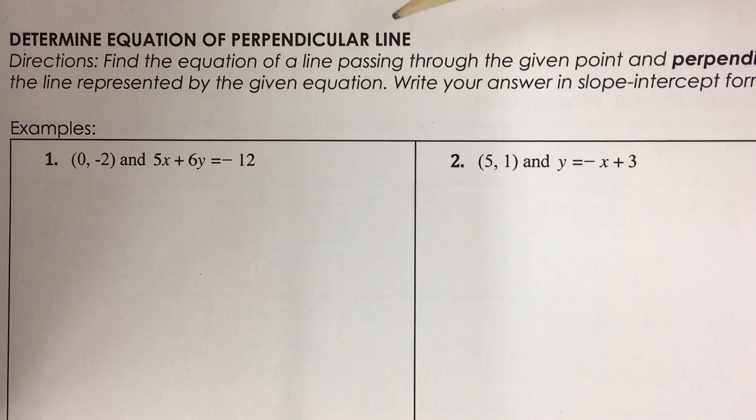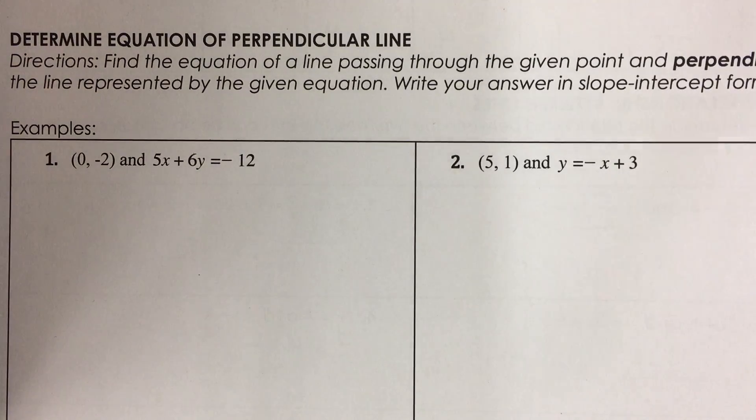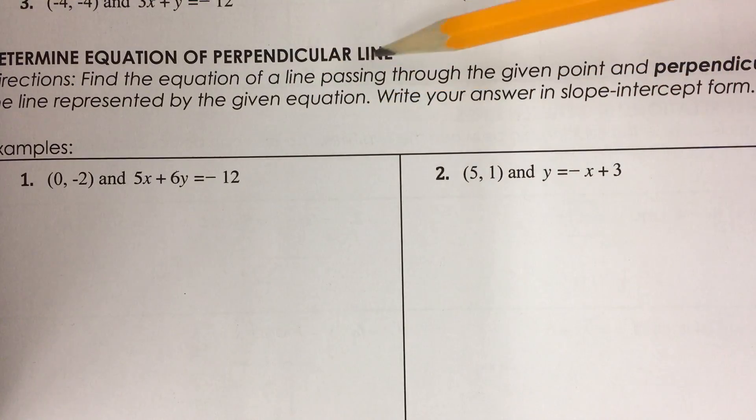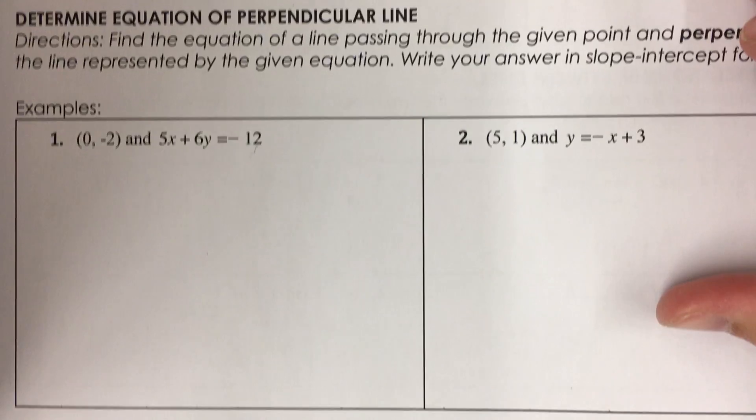In this final video, we'll be finding the equation of a perpendicular line. It's very similar to finding the equation of a parallel line, but one very important change. Find the equation of a line passing through the given point and perpendicular to the line represented by the given equation. Write your answer in slope-intercept form.